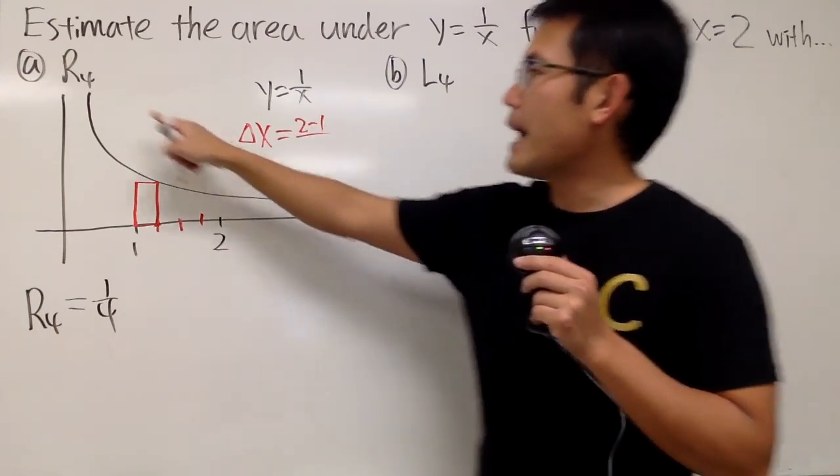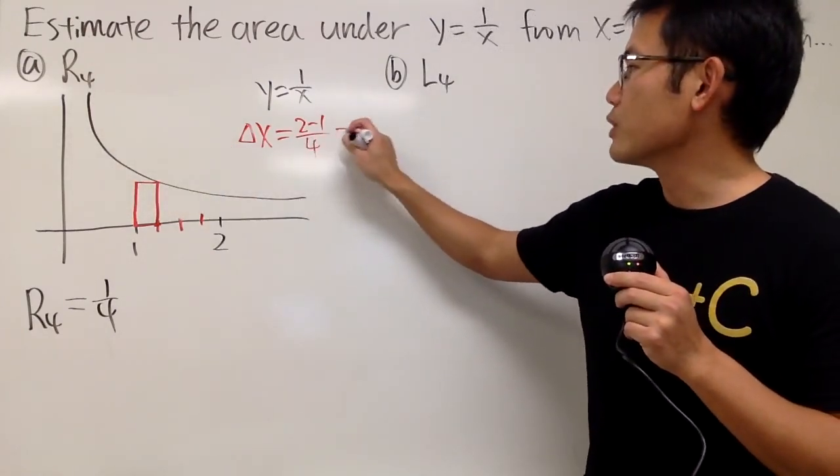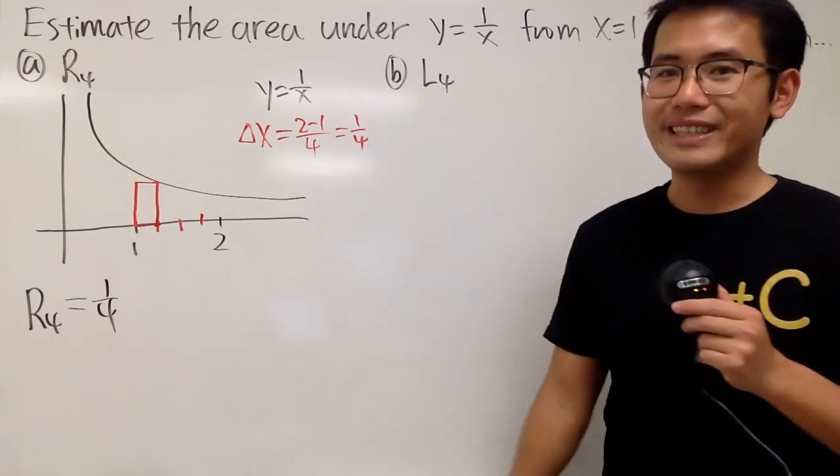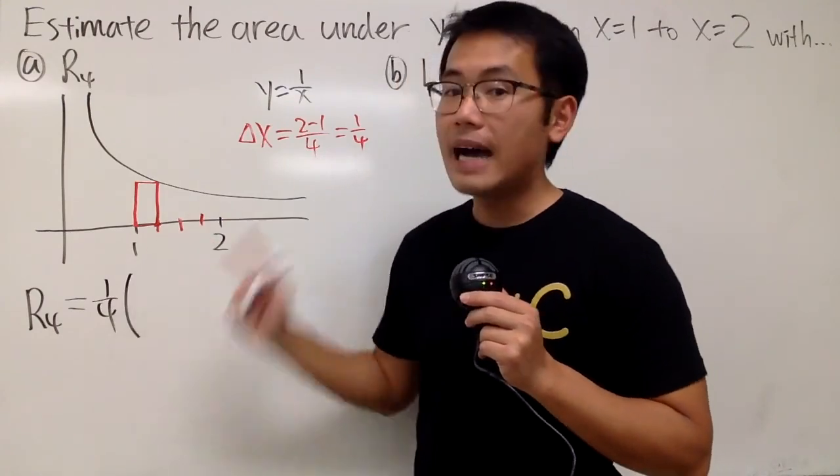which is 2 minus 1, divided by however many rectangles that we want, which is 4. And of course, work that out, we get 1 over 4. All right, so that's the width, which is not so bad, and then we have to multiply by the height.